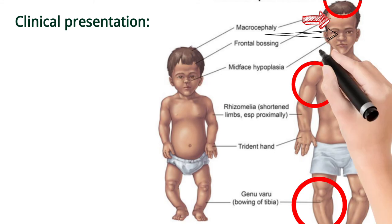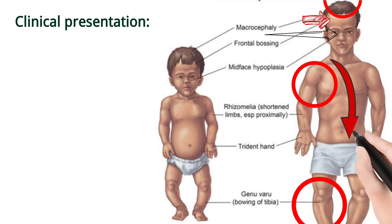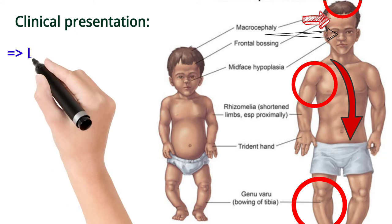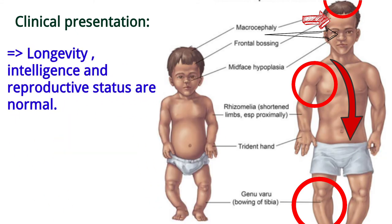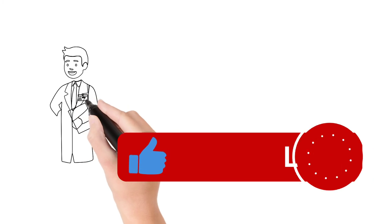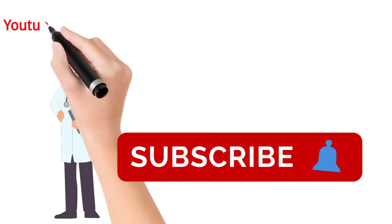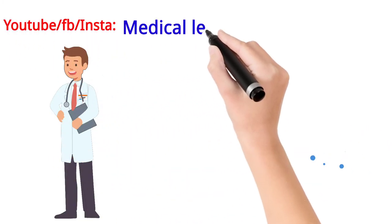In Achondroplasia, the size and length of the trunk remain normal, and language, intelligence, and reproductive status are also normal. This was all about Achondroplasia — for more videos, please subscribe, like, and share with your medical friends. Thanks for watching.